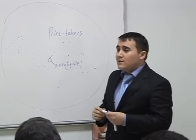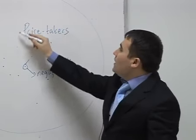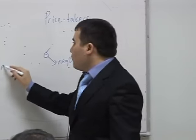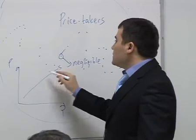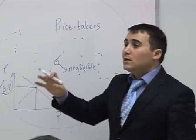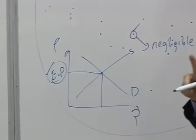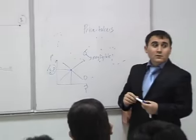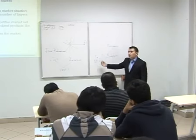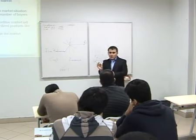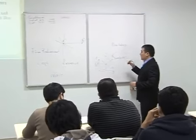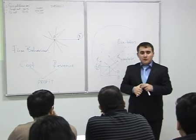Because every individual firm in the perfectly competitive market has no chance to influence price, they are called price takers. Price taker means that if a firm enters the market, as they don't have any chance to change the price, they take the given price and accept it. In every market, supply and demand intersect and there is an equilibrium price — they do not have a chance to change it.